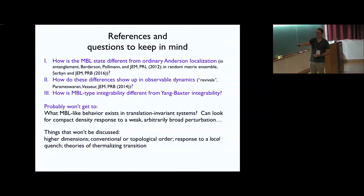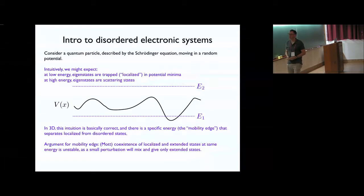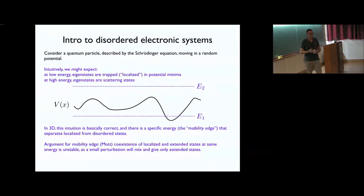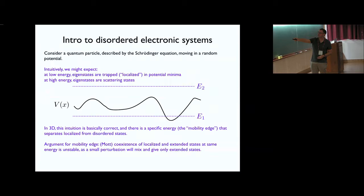We can still say some interesting things I'm pretty confident are true. If we think about an electron moving in a random potential, there's something very surprising: if you took undergrad quantum mechanics and thought about an electron in a random potential with Schrödinger equation with some V(x), you'd guess that at low energy you have bound states in a minimum of the potential, and at high energy you'd still have scattering states — a combination of plane waves, not a bound state that falls off exponentially.